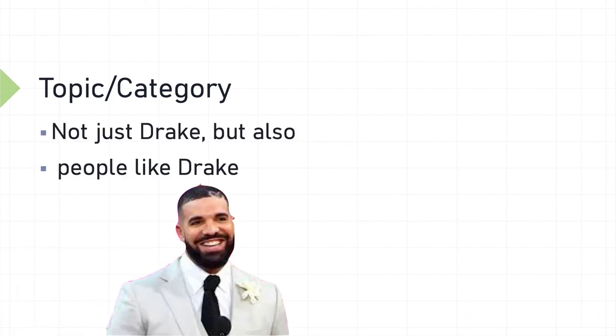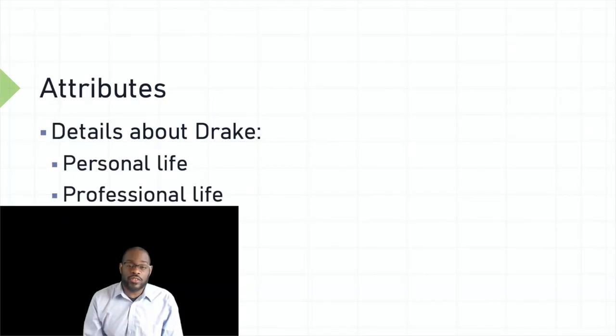This strategy takes that noun that the no precedes and turns it into a topic or category like Drake and people like Drake. Or it broadens negation to include the attributes of the thing discussed. For instance, details about Drake, his personal life, his professional life, where he started, where he is now.